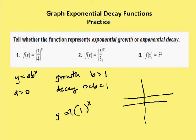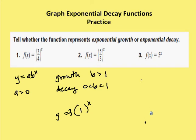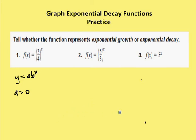So the difference between growth and decay: the b value for growth is greater than one, and for decay it's between zero and one. Looking at problem one, there is no value for a (or a is one), so it has no effect. The b value is three-fourths, which is between zero and one, so this function is decay.